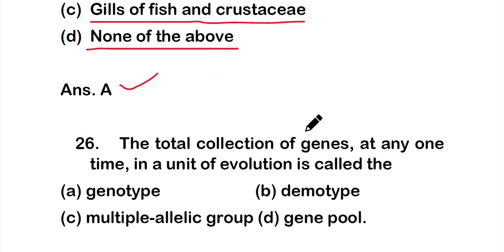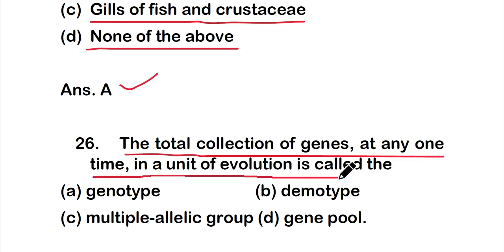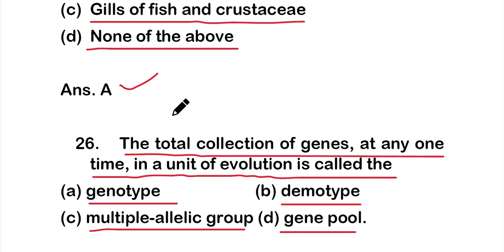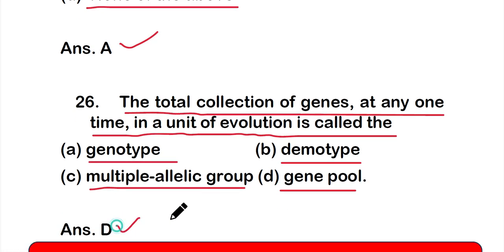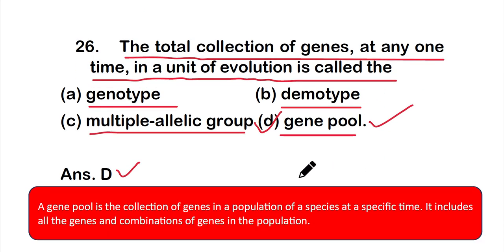Question number 26: The total collection of genes at any one time in a unit of evolution is called the — option A: genotype, option B: demotype, option C: multiple allelic group, or option D: gene pool. The correct answer is option D — gene pool. A gene pool is the collection of all genes in a population of a species at a specific time, including all gene combinations.